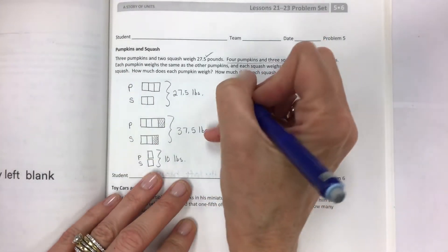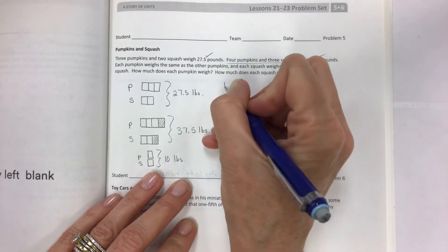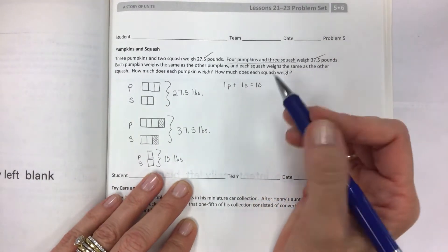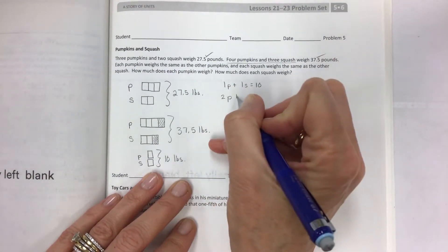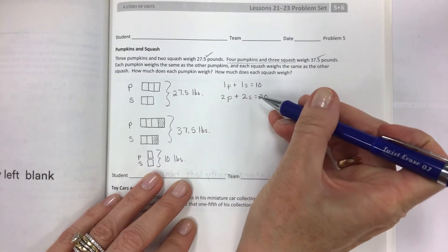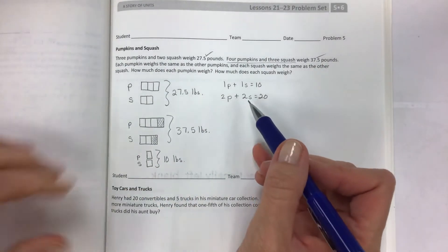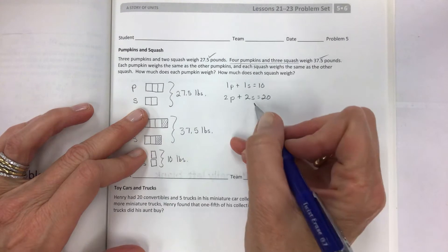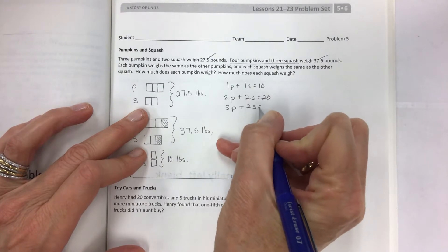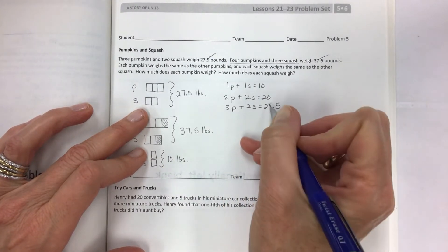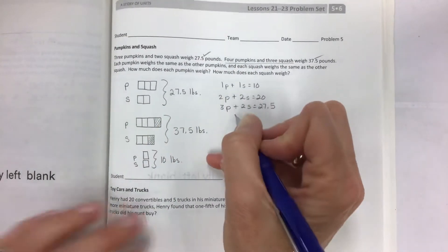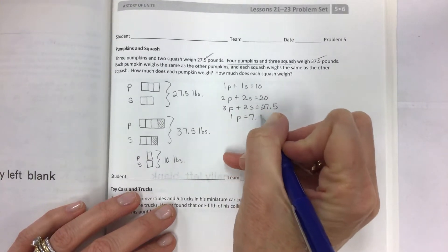Let's make note that one pumpkin and one squash together make up a difference of 10 pounds. That's really important to note. Now if you look and talk through the problem, if one pumpkin and one squash equal 10 pounds and that's the difference, then if I had two pumpkins and two squash that would be 20 pounds. Well I don't have two pumpkins and two squash, but I do have three pumpkins and two squash.